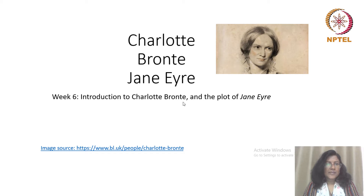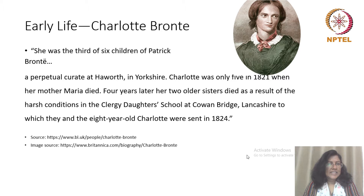Welcome to week six lectures on Charlotte Brontë's Gothic novel Jane Eyre. In today's session, I am going to talk about the author, her early life experiences, and the plot of her novel. Charlotte Brontë was a third of six children of Patrick Brontë, a perpetual curate at Haworth in Yorkshire. Charlotte was only five in 1821 when her mother Maria died. Four years later, her two older sisters died as a result of the harsh conditions in the clergy daughters' school at Cowan Bridge, Lancashire, to which they and the eight-year-old Charlotte were sent in 1824.